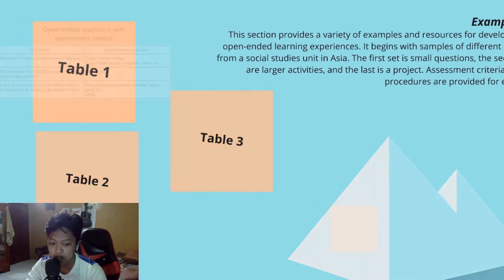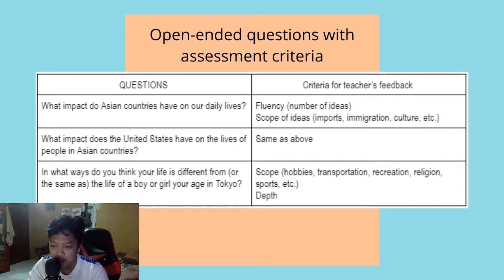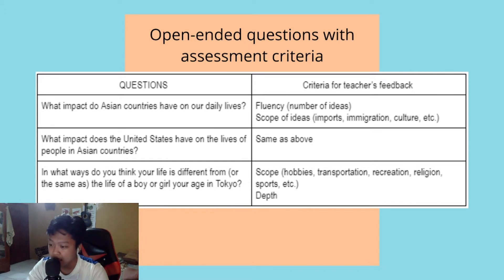Table 1 is open-ended questions with assessment criteria. For example, the question: 'What impact do Asian countries have on our daily lives?' The criteria for teacher's feedback is fluency, or the number of ideas, and scope of ideas — imports, immigration, culture. Next: 'What impact does the United States have on the lives of people in Asian countries?' Same as the above — fluency, number of ideas, scope of ideas, imports, immigration, culture, etc.